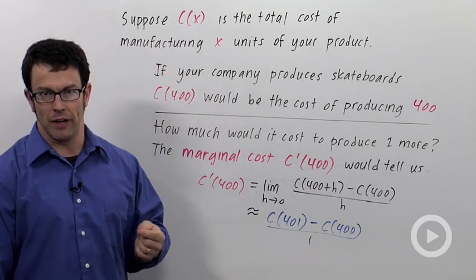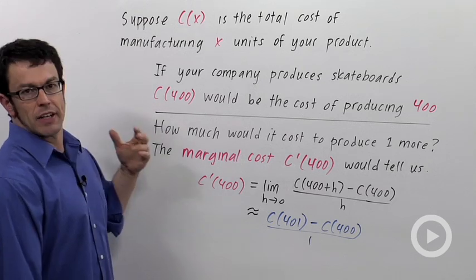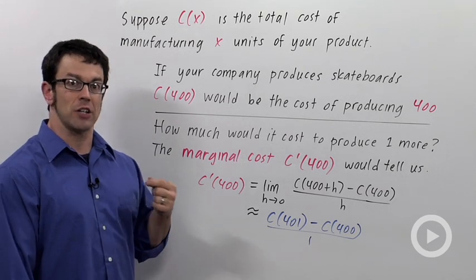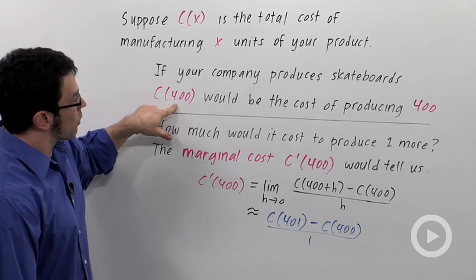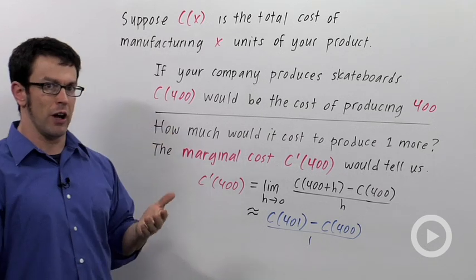For example, if your company manufactures skateboards, C of X would tell you what the cost is of manufacturing X skateboards. If your company produces skateboards, C of 400 would be the cost of producing 400 of them.